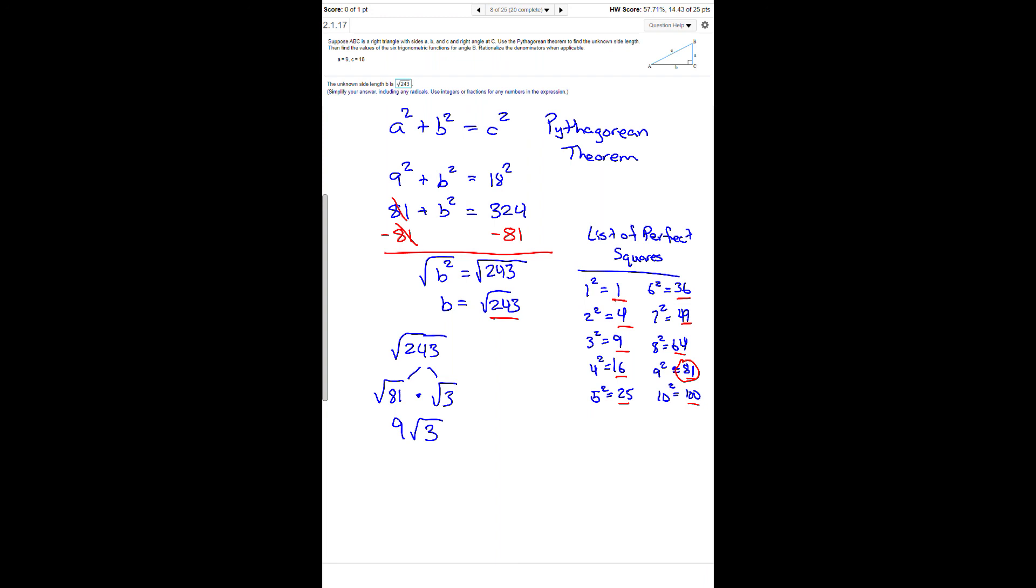The goal whenever you simplify using prime factorization is to get a perfect square and a prime number for your answers when you're trying to reduce. That's the ultimate goal when using prime factorization.